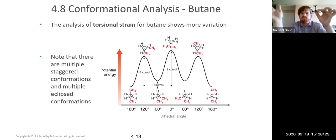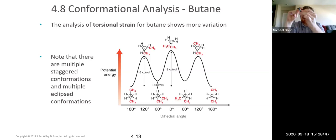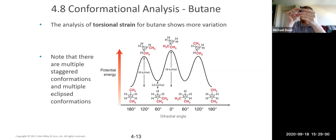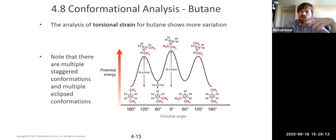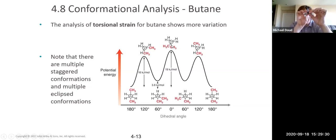Can you think of why the second eclipsed conformation costs more than the first? The first eclipsed conformation has two hydrogen-methyl group eclipsing interactions, each costing six kilojoules per mole. The second eclipsed conformation, however, has two hydrogen-hydrogen interactions and a methyl group-methyl group interaction. Methyl groups are much bigger than hydrogens — larger electron clouds cause more repulsion. That accounts for an additional three kilojoules per mole of strain compared to the first eclipsed conformation.